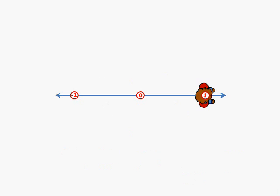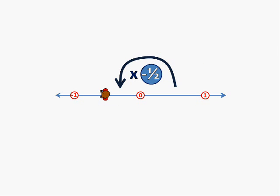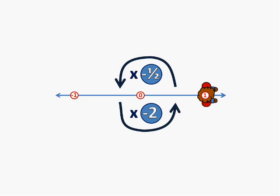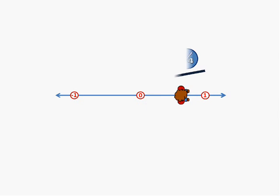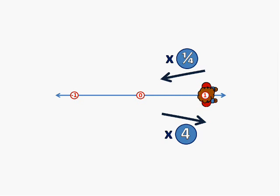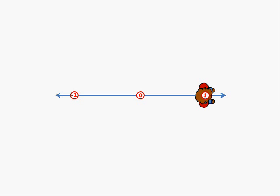If you were instead to multiply your velocity by minus a half, then you would not only turn around, but your speed would also half. The size, or in mathematical terms the magnitude, of the number that you multiply by, will affect your speed. If the magnitude is bigger than one, you will go faster. If it is less than one, you will go slower. And of course if it's one, you will keep the same speed. So that's all pretty boring and obvious so far.